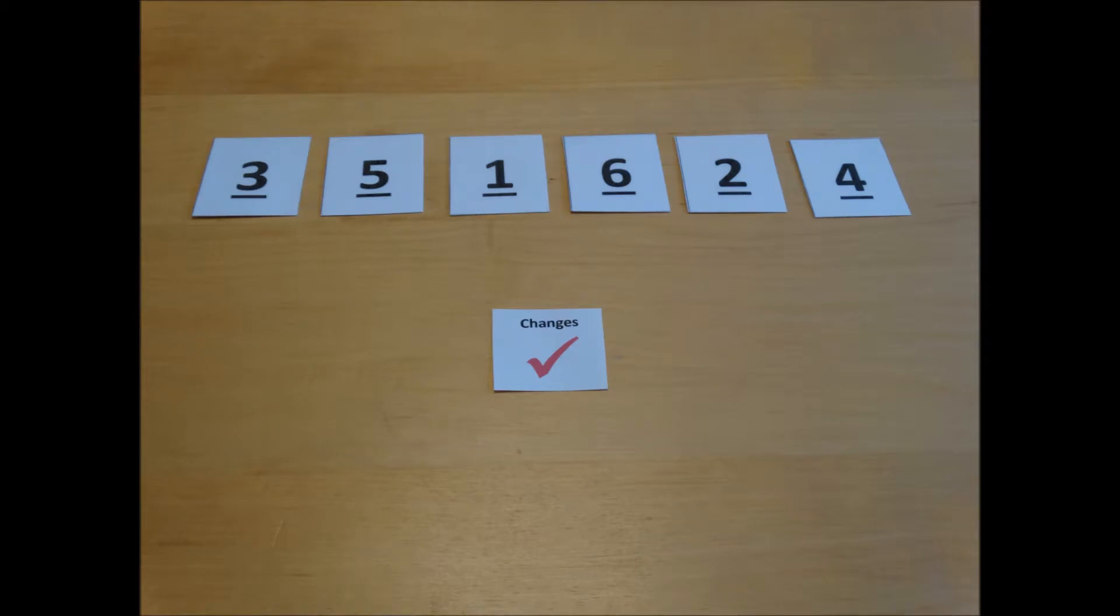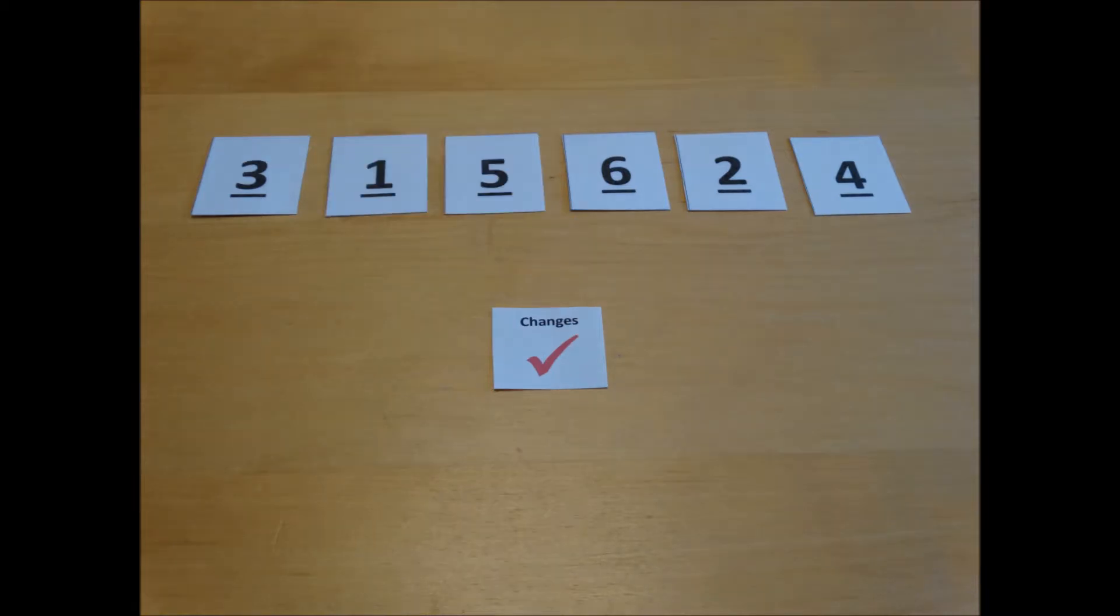Before we looked at the numbers in positions 0 and 1. Now we need to move on a space so we'll look at the positions for 1 and 2 and swap them around if they're in the wrong order. We continue doing this for all the numbers, moving along one and swapping them until we get to the end of the array.